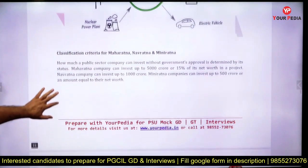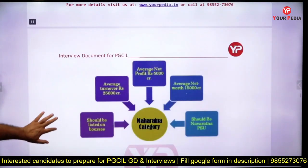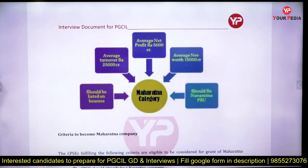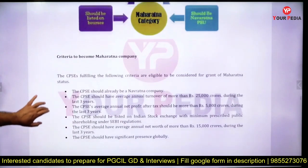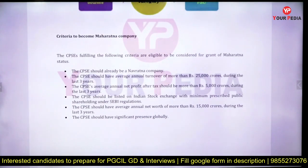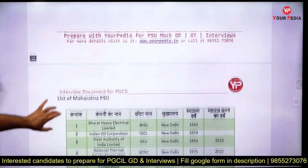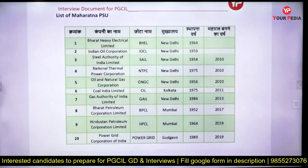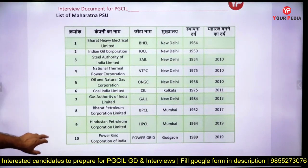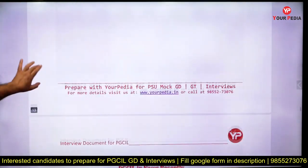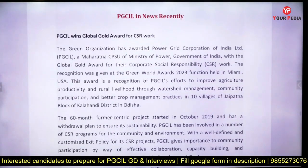The classification of Maharatna, Navratna, and Miniratna companies is given. You should know the criteria to become a Maharatna company — what should be the net profit, average turnover, and other requirements. It should already be a Navratna company before becoming Maharatna. Power Grid is the most recent company to achieve Maharatna status, in 2019 — about 30 years after its founding in 1989.